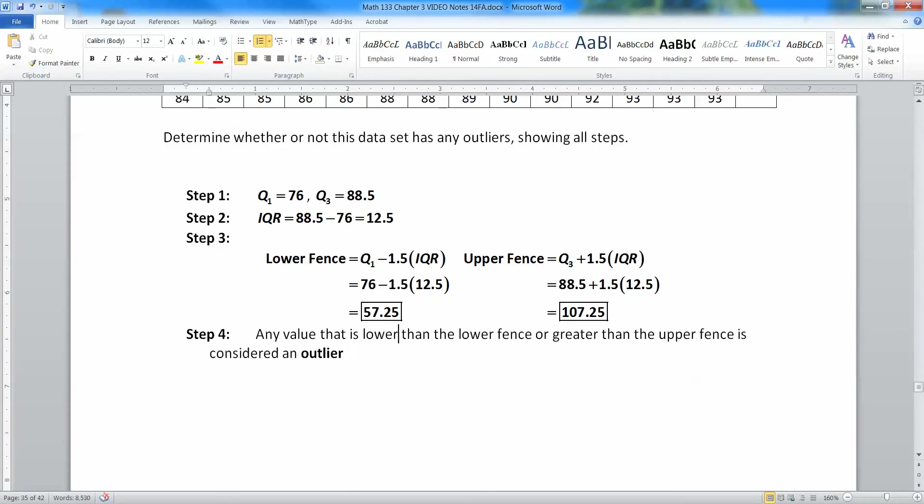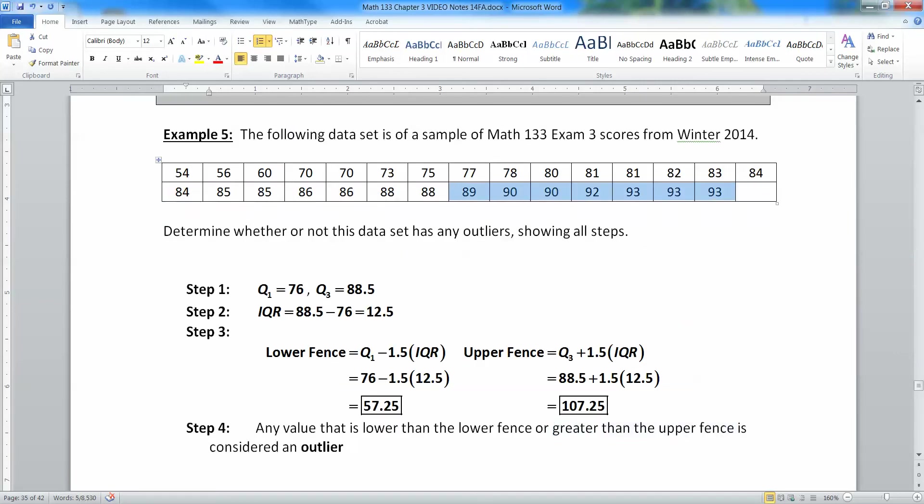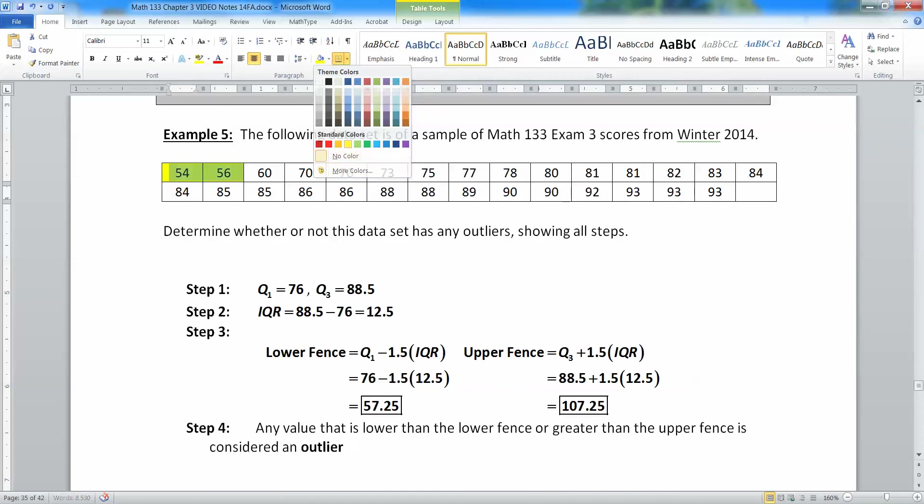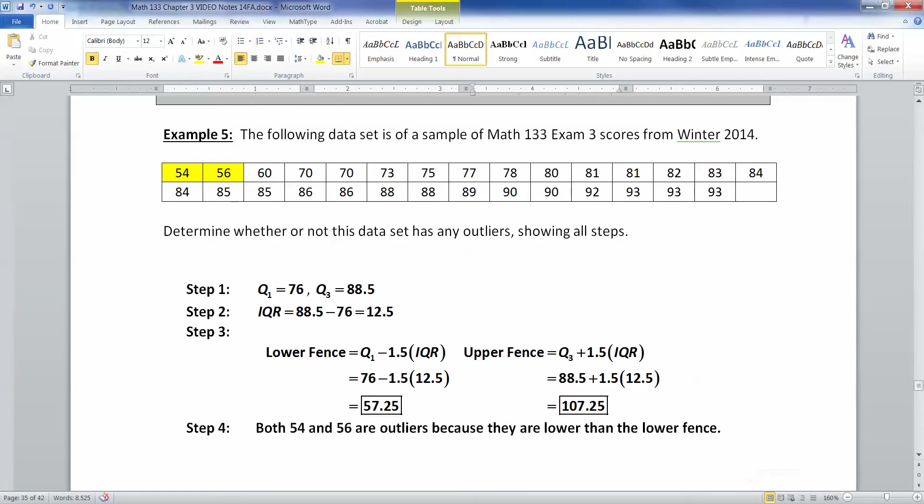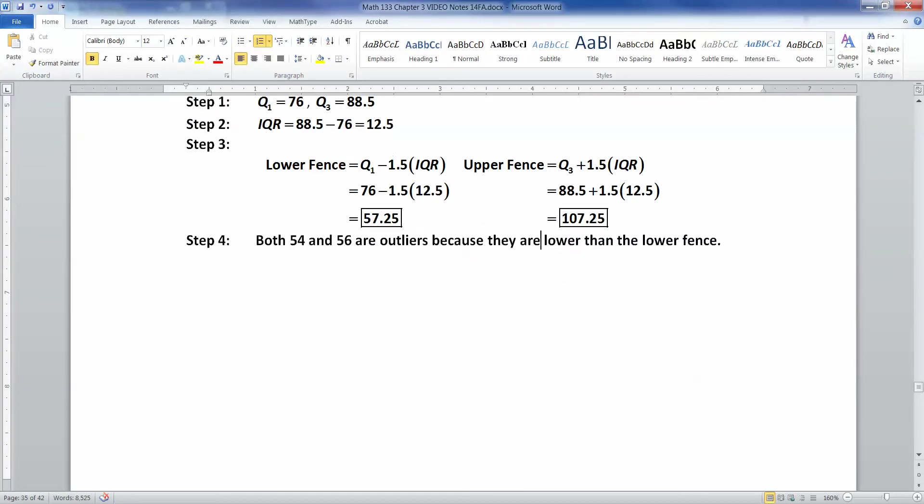Now, if anything is lower than the lower fence or greater than the upper fence, it's an outlier. So if we look back at our data set, there's nothing that's above that upper fence. These are exam scores. Nothing's going to be at 107.25%. But let's look at the low end for a second. We have 57.25. That means both of these values right here are outliers, right? Because they are below that lower fence. So both 54 and 56 are outliers because they are lower than the lower fence. And that is the official way to find for outliers.